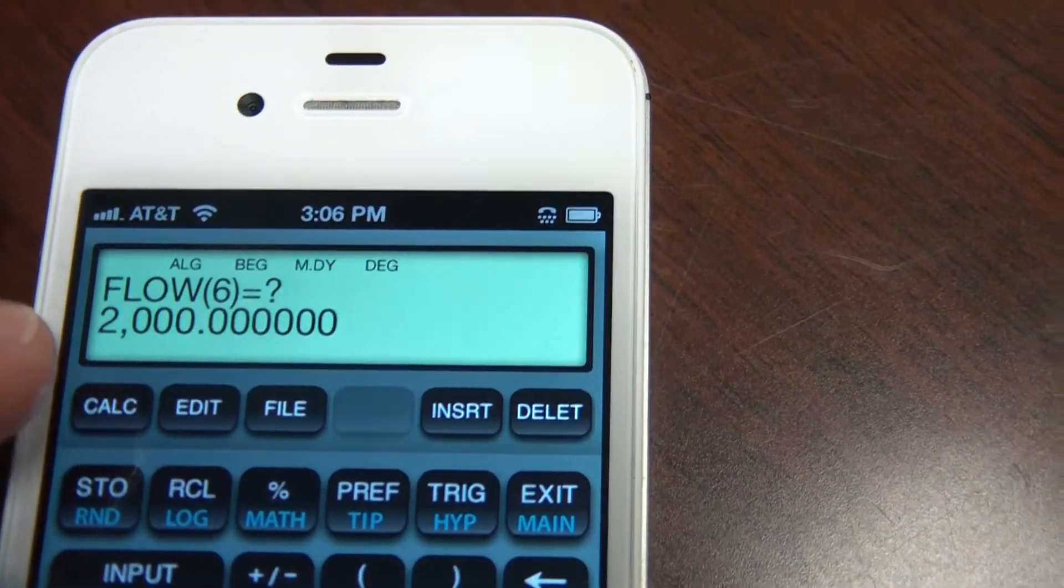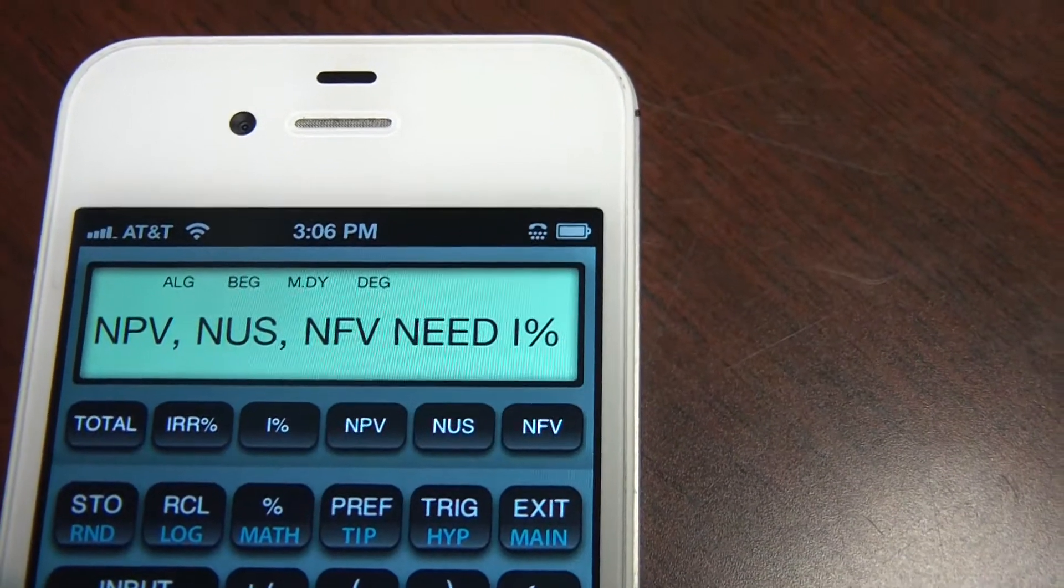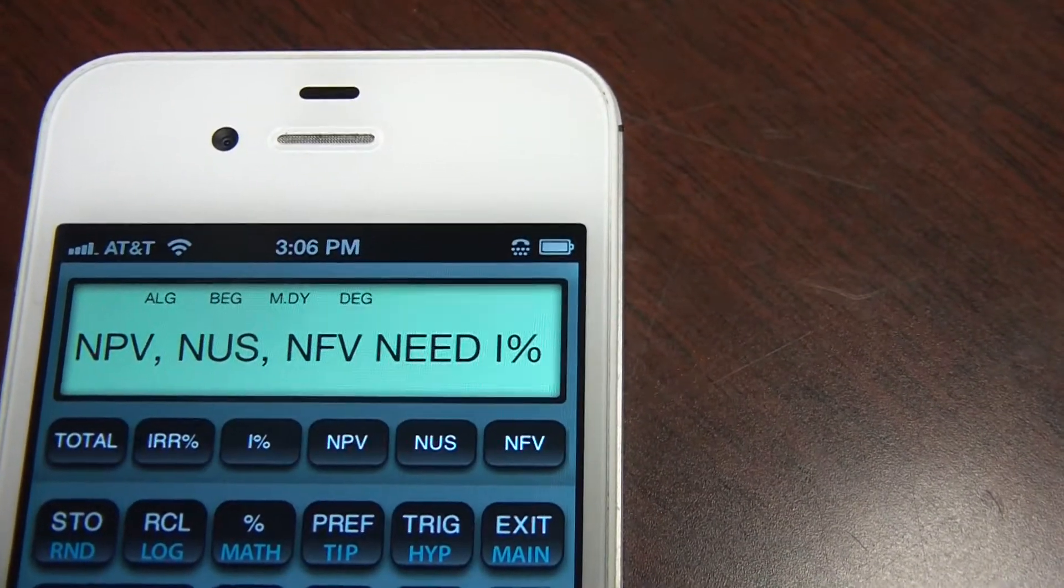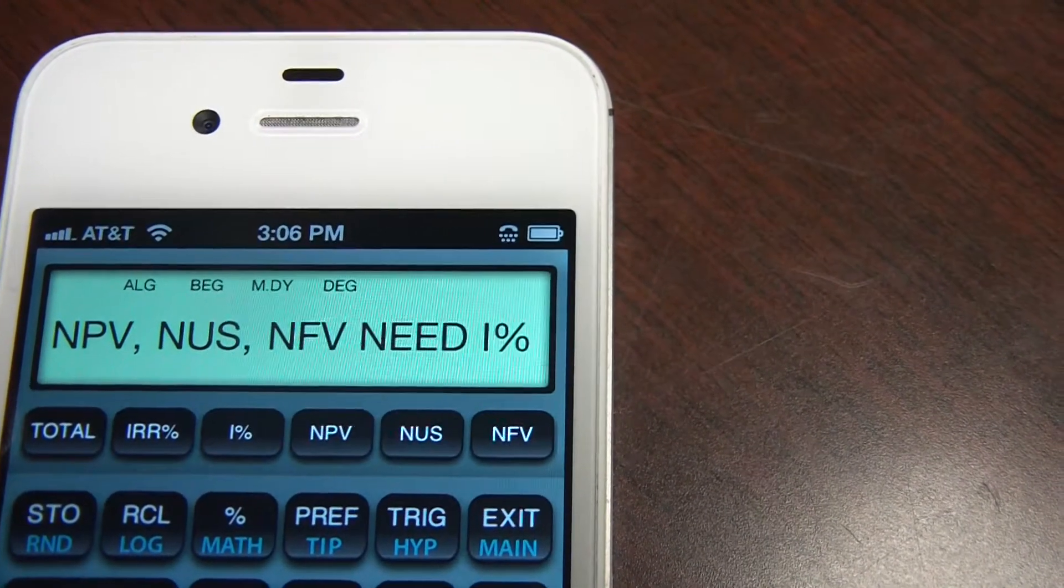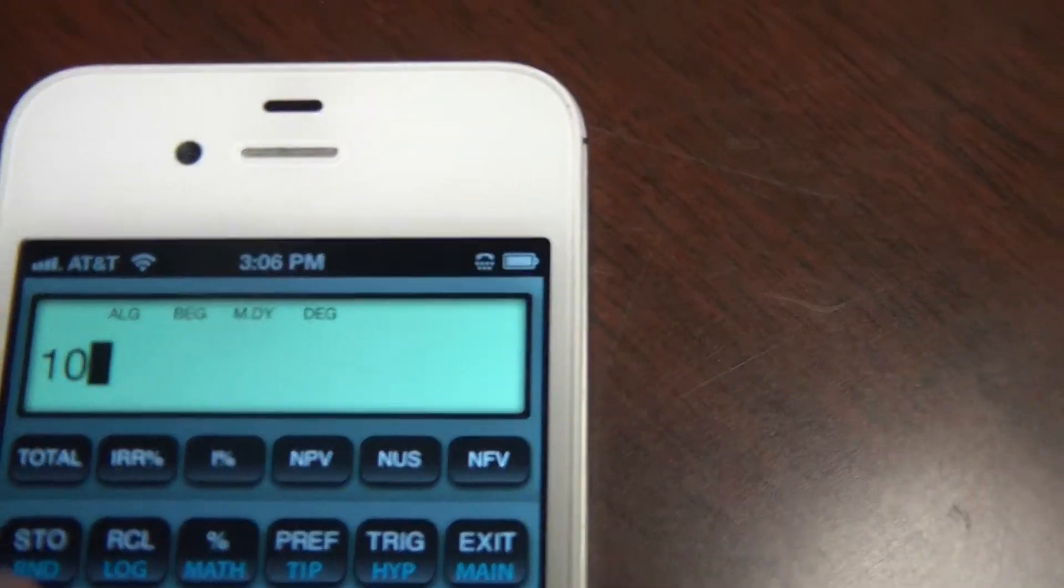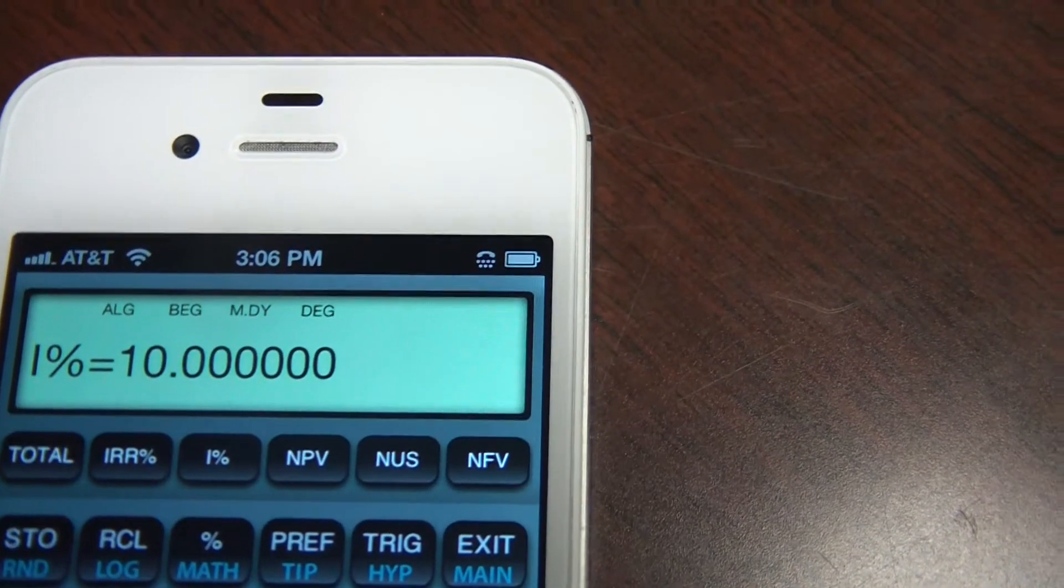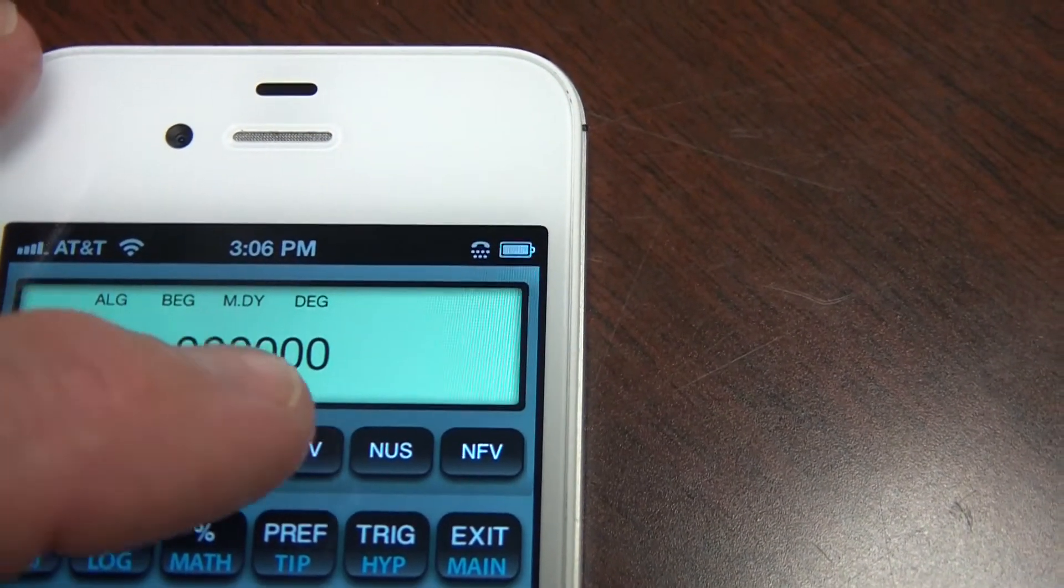Now I want to calculate this so I go to the Calc key. It's telling me the seed value for figuring the net present value of this. Suppose our cost of capital is 10%. Put in a 10% interest rate as a cost of capital. Now I can calculate the net present value.